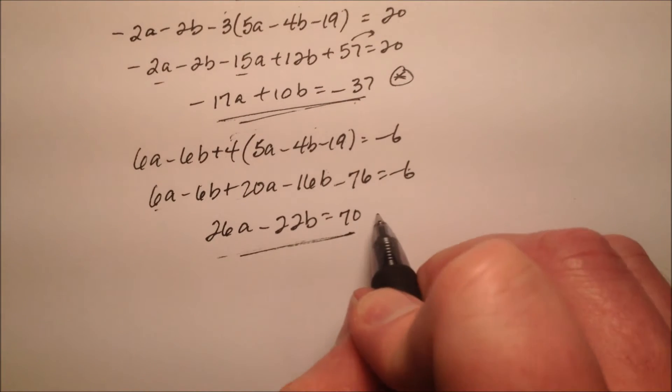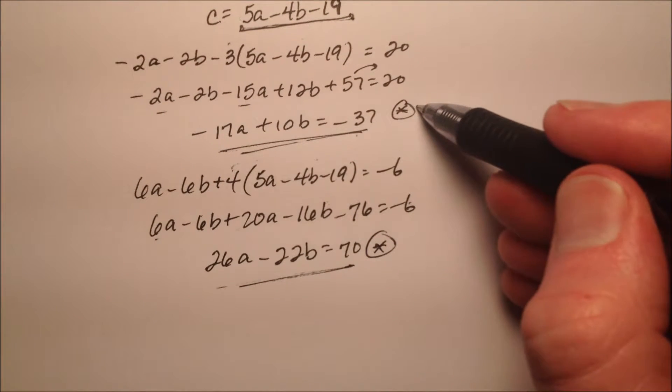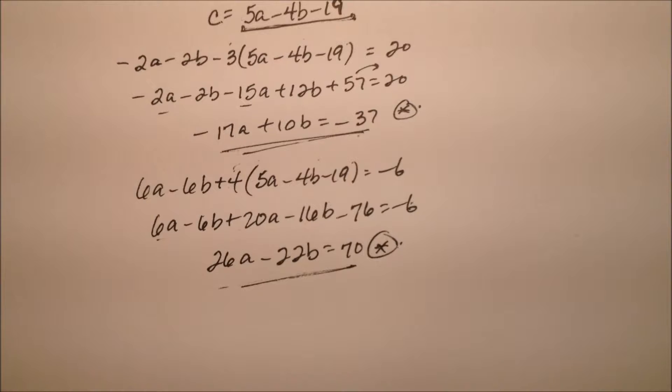So now I have two equations with two unknown values. I have this guy and this guy. So I've whittled my system down from three equations with three unknown values to two equations with two unknown values.